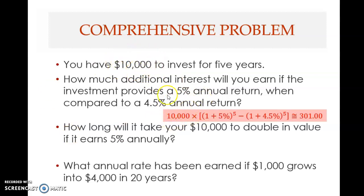$10,000 is the present value, common to both calculations. The future value at 5% is $10,000 × (1.05)^5. The future value at 4.5% is $10,000 × (1.045)^5. The difference between the two — factoring out $10,000 — gives the difference in the future value interest factors. Multiplying by $10,000, we get $301. So with 5% interest, your future value will be $301 higher than with 4.5%.